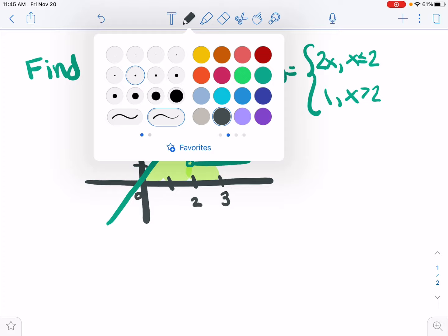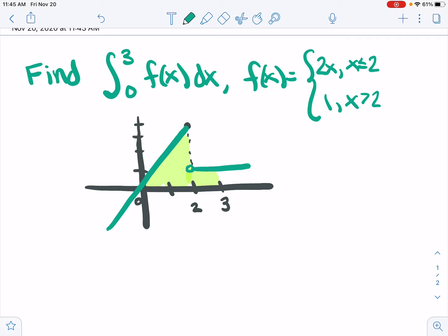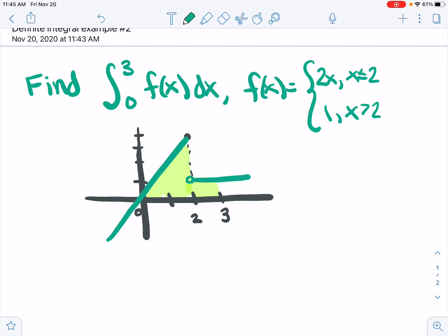That's an area we can compute because we know some geometry. So again, no calculus. It's just understanding that a definite integral is asking for area. And in this case, we can get the area from geometry.